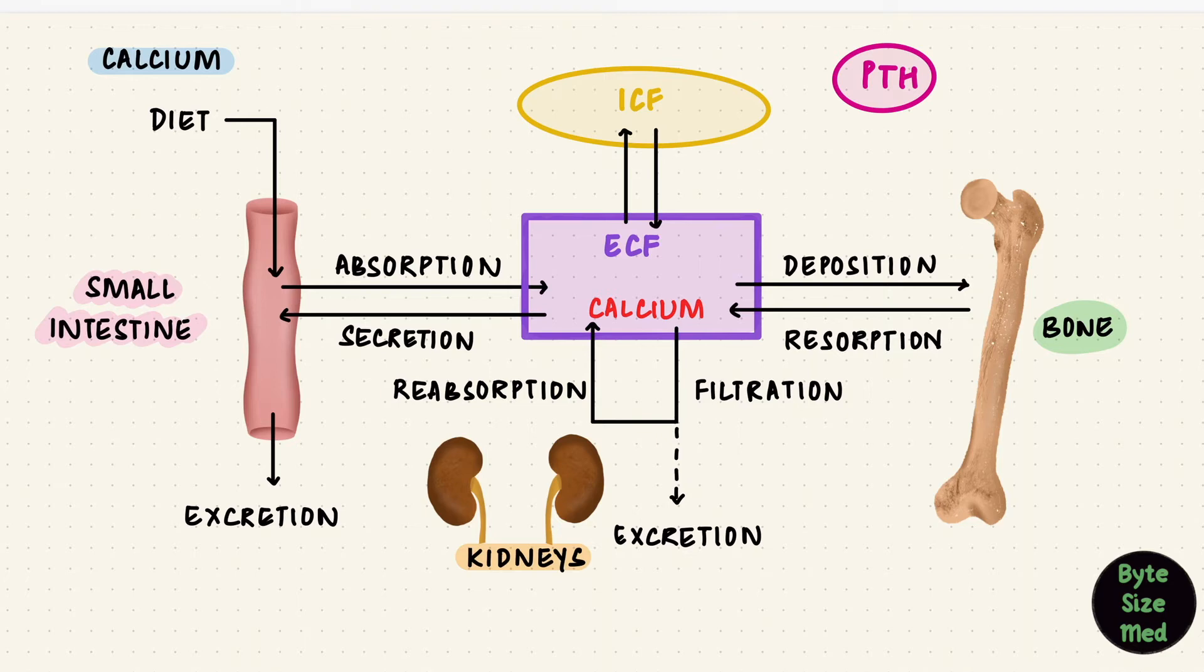On the kidney, it can increase the reabsorption of calcium. That puts more calcium back into the ECF. On bone, it can increase bone resorption, again bringing the plasma calcium back up. In the kidney, calcium gets reabsorbed in three parts.